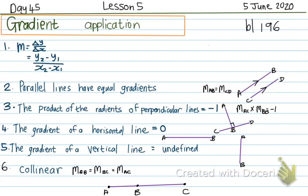Good day, Grade 10. This is Day 45, Lesson 5 of Analytical Geometry, Chapter 8. It's the 5th of June and we are continuing with the gradient today. We've learned about the distance formula, the midpoint formula and the gradient. Today we're going to see how we apply the gradient. It's on page 196 of your textbook.